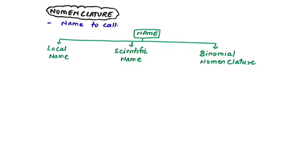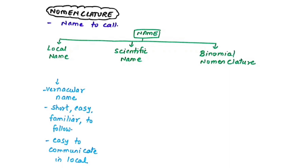There are three methods of nomenclature: local name, scientific name, and binomial nomenclature. A local name is a vernacular name used in local areas. For example, mango is called 'aam,' 'scary,' or 'copper' in different regions of India. A cat is called 'billi' in UP and 'manjar' in Maharashtra. The advantages of local names are that they are short, easy, familiar, and easy to communicate locally.